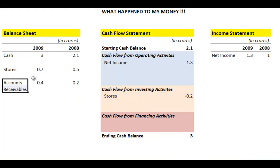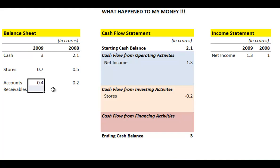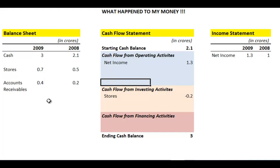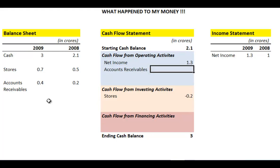Next, we have accounts receivable. Accounts receivable is essentially cash that somebody has to pay you. You've given them the product and probably recognized part of the revenue, so this net income probably includes the revenue attributed to accounts receivable — but you haven't got the cash yet. If you hadn't recognized the revenue, your net income would actually be 20 lakhs lower. Since you took the whole net income but this money (20 lakhs) hasn't been received, and the account went up from 20 lakhs to 40 lakhs — accounts receivable went up by 20 lakhs — that is a cash flow from operations, and your accounts receivable is a negative 20 lakhs.